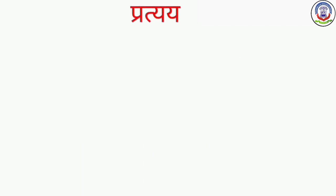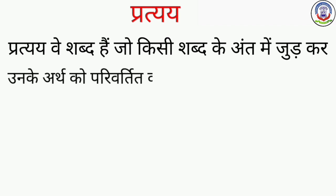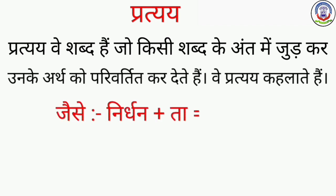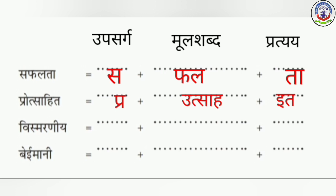Ab hum pratyay ke baare mein padhte hain. Pratyay ve shabd hain jo kisi shabd ke ant mein judkar unke arth ko parivartit kar dete hain — ve pratyay kehlaate hain. Jaise: Nirdhan + ta = Nirdhanta. Upsarg hamesha shabd ke aarambh mein judkar unke arth mein parivartan laate hain. Jaise: Safalta mein 'Sa' upsarg hai, 'fal' mool shabd hai, 'ta' pratyay hai. Protsahit mein 'Pra' upsarg hai, 'utsah' mool shabd hai, 'it' pratyay hai.